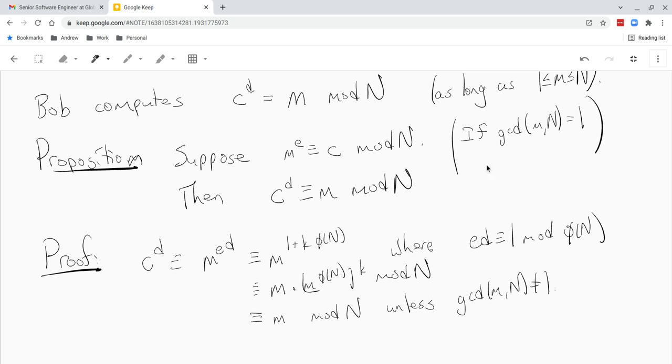But if the gcd, like if m is less than or equal to n and it has gcd not equal to 1, then m is actually either equal to p or q.